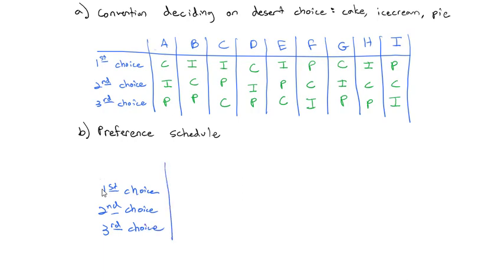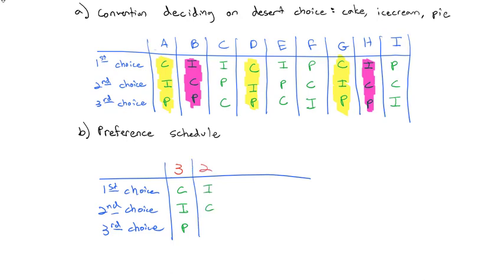This time, we're going to group common results together. So when I see person A voted CIP, there's another CIP from D and another CIP from G. So that means really I've got three people who have voted CIP. In the next column, I see ICP. There's another ICP, so that result happened twice.